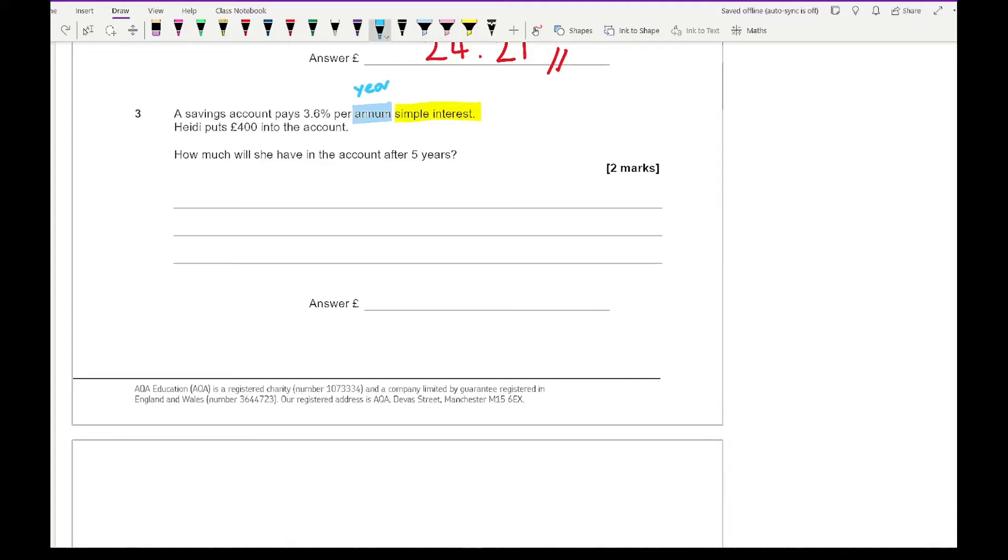Simple interest basically means that you work out the first year and that interest amount does not change. What I need to do is work out what 3.6% of £400 is. So this is going to be 0.036 multiplied by 400. Entering 0.036 multiplied by 400 gives me an answer of £14.40.